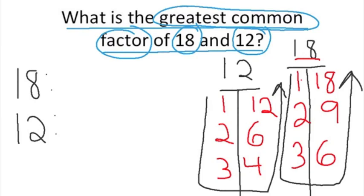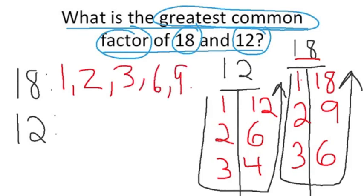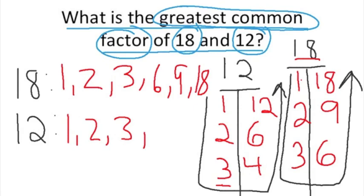The factors of 18 in order from least to greatest are: 1, 2, 3, 6, 9, and 18. The factors of 12 in order from least to greatest are: 1, 2, 3, 4, 6, and 12.